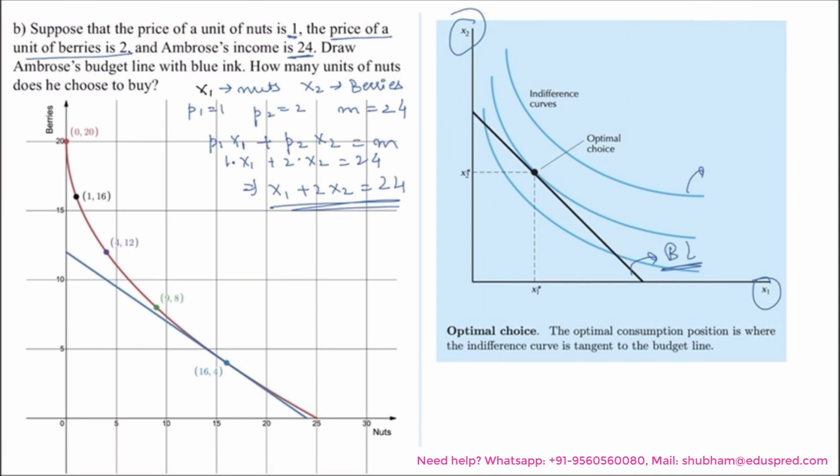Now the optimal choice for a consumer is where the indifference curve is tangent to the budget line. If you think about it a moment, you will see that this has to be the case.